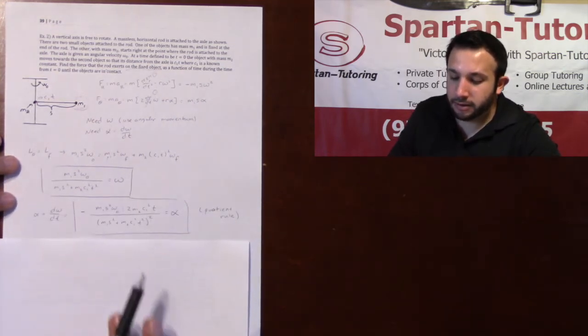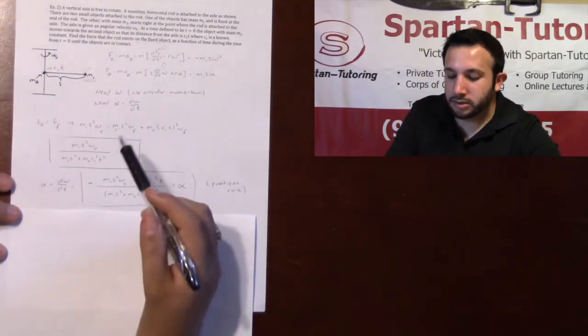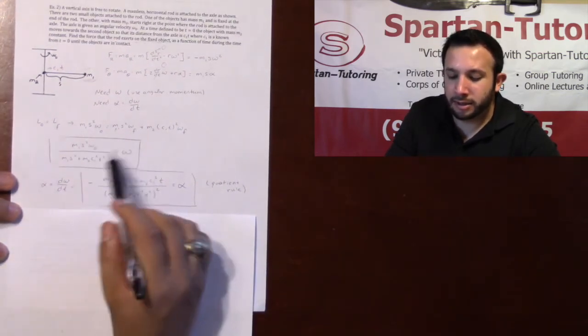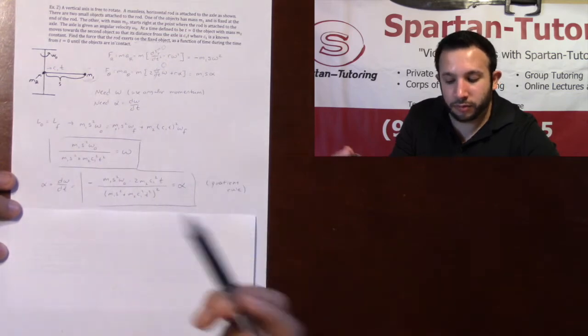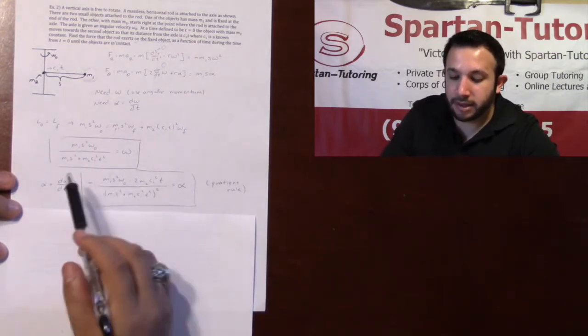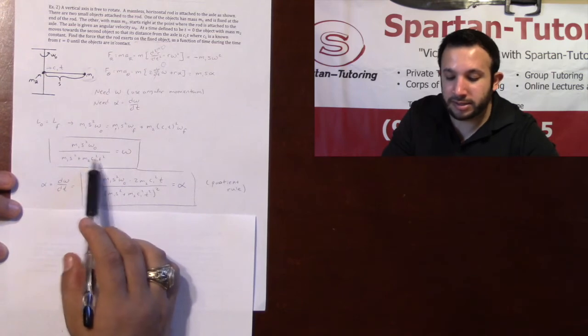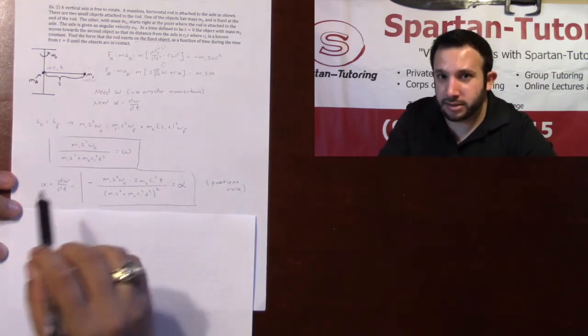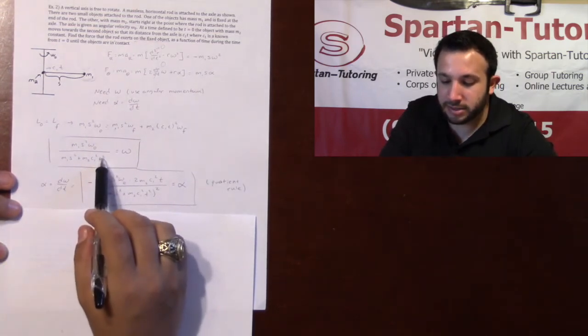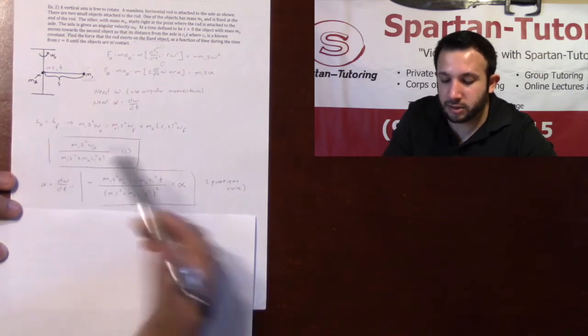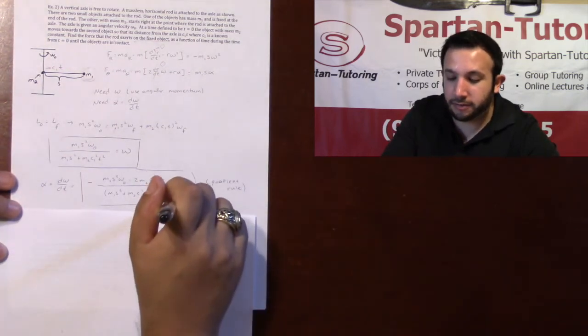As for alpha, you gotta use quotient rule. It's gonna be your low d high minus your high d low over low squared. And going through it, alpha is the derivative of omega with respect to t. And notice that everything else is a constant except for that t. That's why the derivative of the top is just gonna be 0. So, that's how you get alpha.